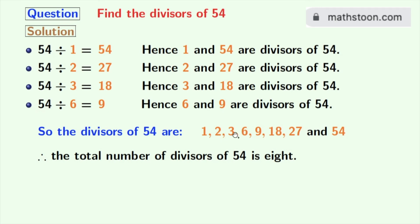Now please look at these divisors. See that 2 and 3 among these numbers are prime numbers because these two numbers do not have any divisor other than 1 and the number itself. So we can say that the prime divisors of 54 are 2 and 3.